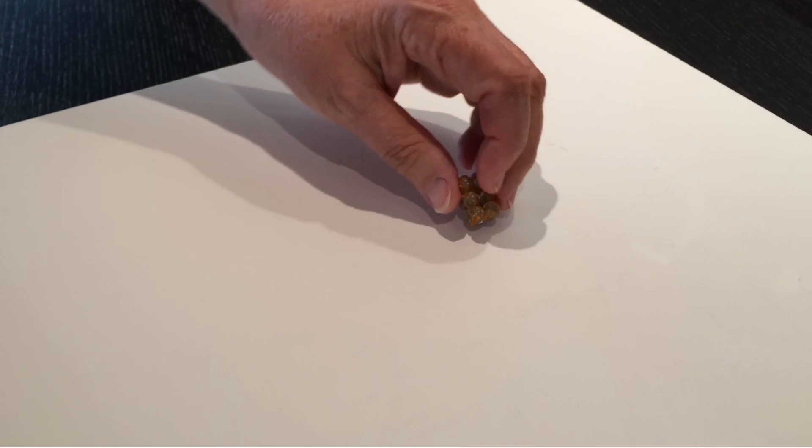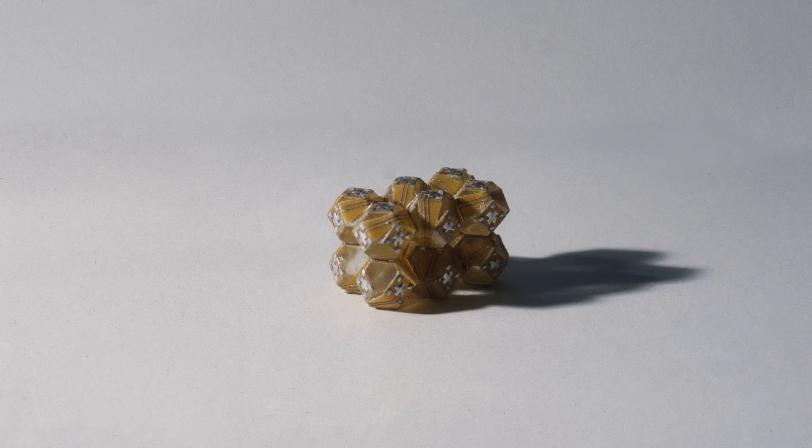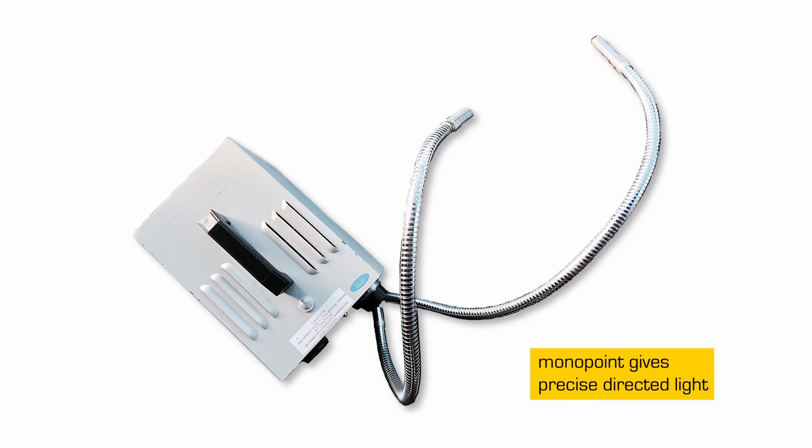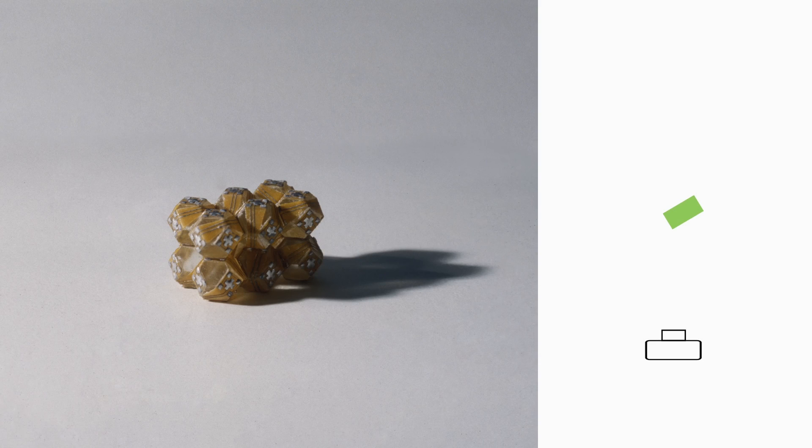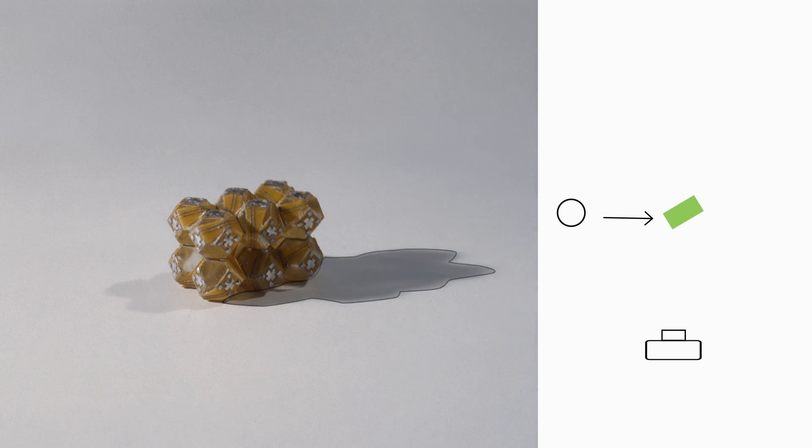Now, for example, looking at this small assemblage, which is about two centimeters across. I lit this with one light. It's a monopoint. It's somewhat of a fiber optic source. And you could see carefully, if you look at this image, where does the light source come from? And hopefully you will figure out that if the shadow is here, then the light source has to be around here.